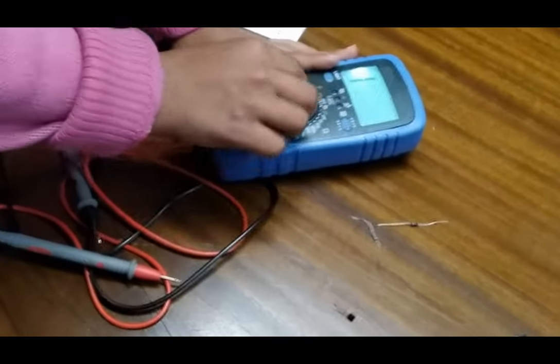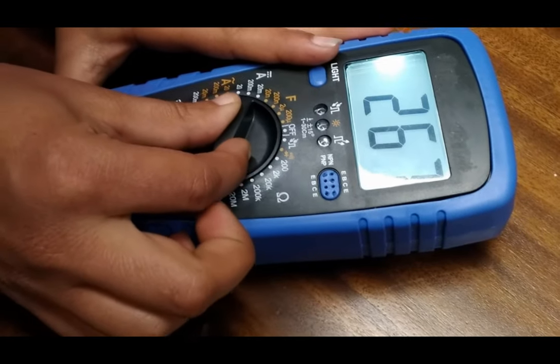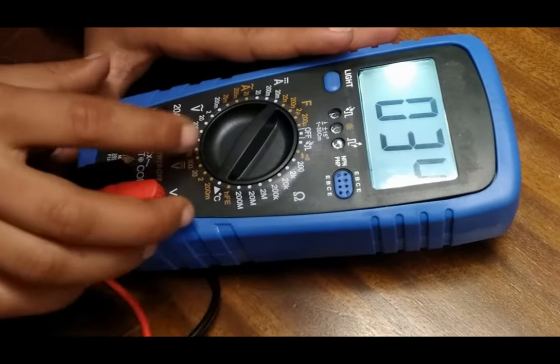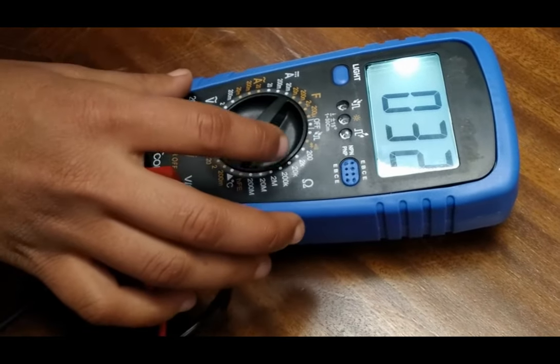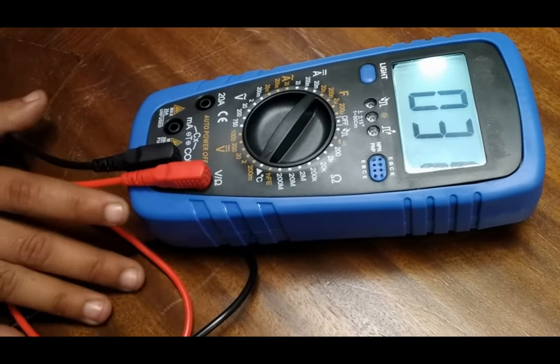Now we can measure the environment temperature by setting this knob to degrees Celsius. As we can see on the display, there is 33 value coming, meaning 33 degrees Celsius temperature is here.